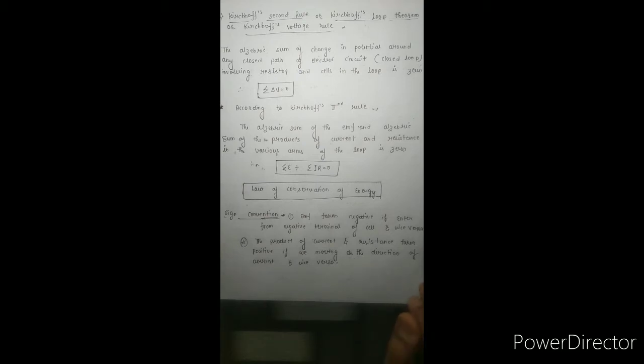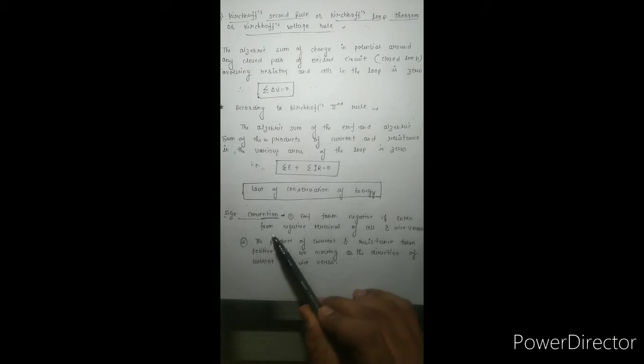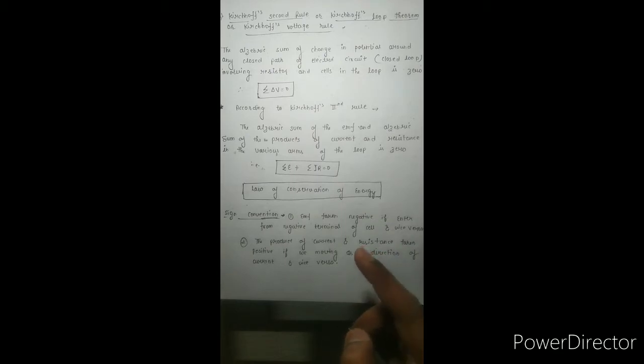When we use numerical problems we have a sign convention rule. You may see different sign conventions in different books, but we will use a simple method. We assume that EMF is taken as negative if we enter the cell from the negative terminal while traversing the loop, and taken as positive if we enter from the positive terminal.